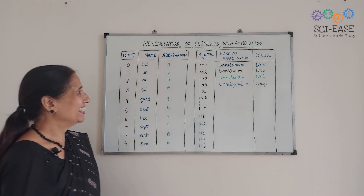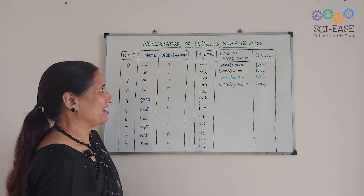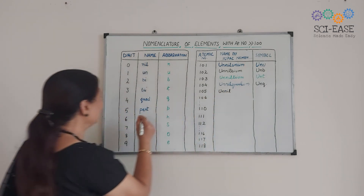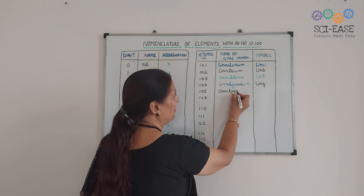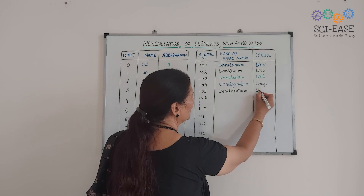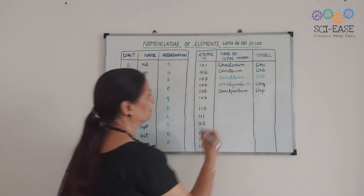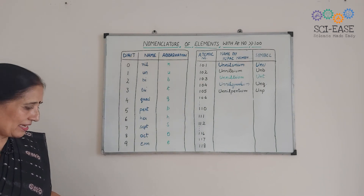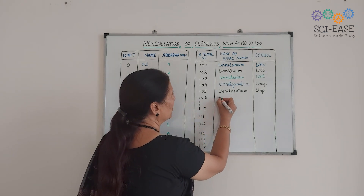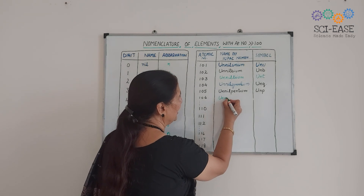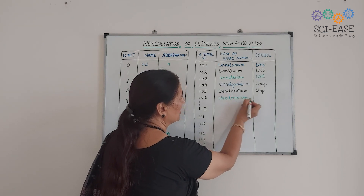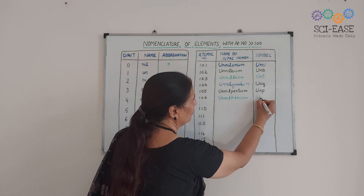For element 105: digits 1, 0, 5 — 'un', 'nil', 'pent', giving 'Unnilpentium'. Symbol: U, n, p — 'Unp'. For element 106: digits 1, 0, 6 — 'un', 'nil', 'hex', giving 'Unnilhexium'. Symbol: U, n, h — 'Unh'.